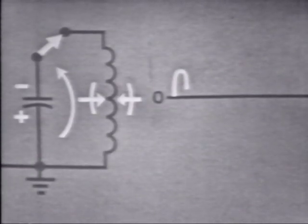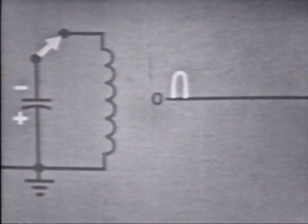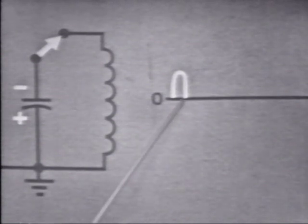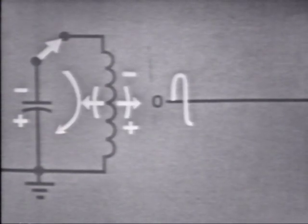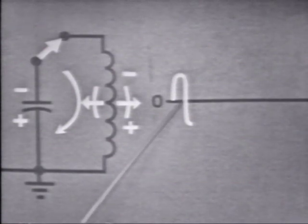This causes the capacitor to charge in the opposite direction. When the field about the coil is completely collapsed, current is zero and the capacitor is charged in the opposite direction — it will again discharge through the coil. As current begins to increase, the field about the coil expands. Notice that current is now flowing in the opposite direction, which we'll show on our graph.